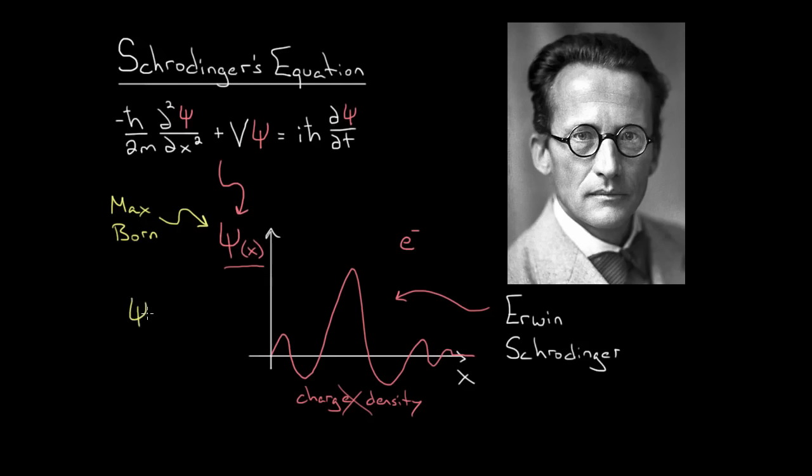Once you have psi, what you do is you square this function. So take the absolute value, square it. And what that's gonna give you is the probability of finding the electron at a given point. Now technically, it's the probability density, but for our purposes, you can pretty much just think about this as the probability of finding the electron at a given point.